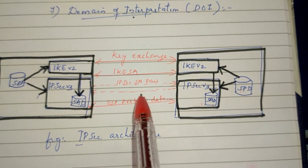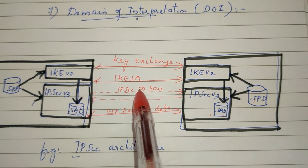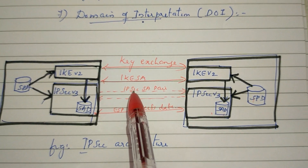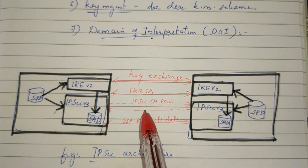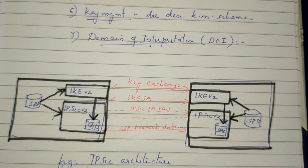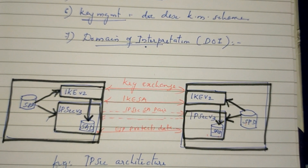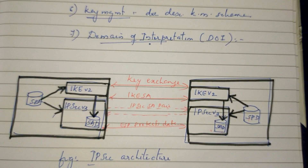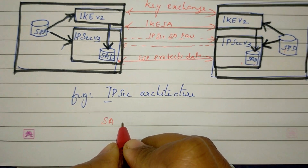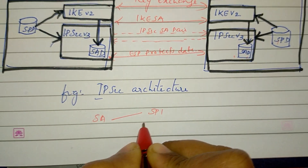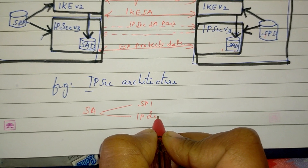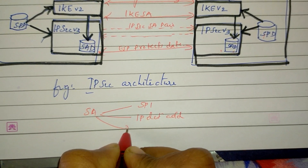The Security Association involves key exchange and protection of data. The three parameters of a Security Association are: the Security Parameter Index, the IP Destination Address, and the Security Protocol Identifier.